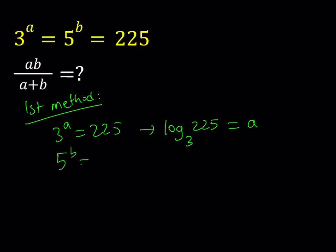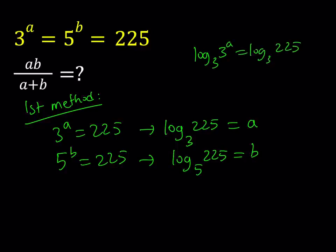And since 5 to the power b is equal to 225, from here I can safely say that log base 5 of 225 is equal to b. Again, if you use the definition, you can get these results. You can also get the same results if you just take this expression 3 to the power a equals 225 and log both sides with base 3, you would be getting the exact same thing. You're going to bring down the a, and log 3 base 3 is just going to be 1. That way you'll get a equals the same thing.